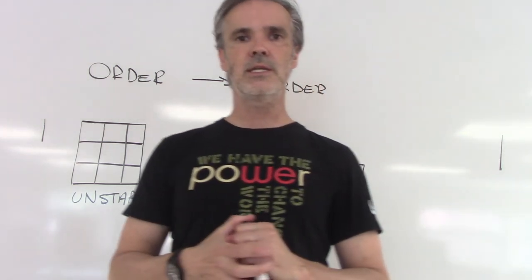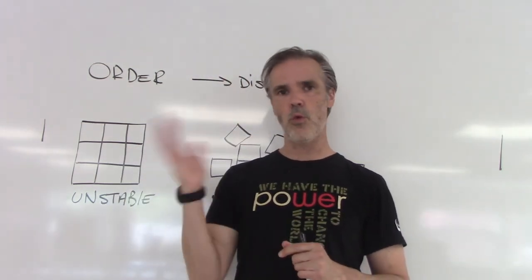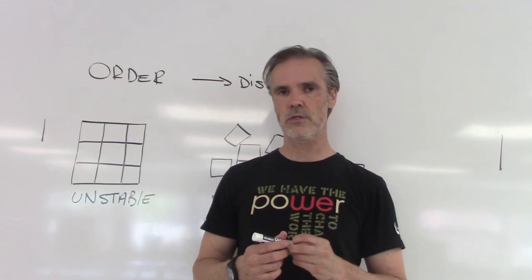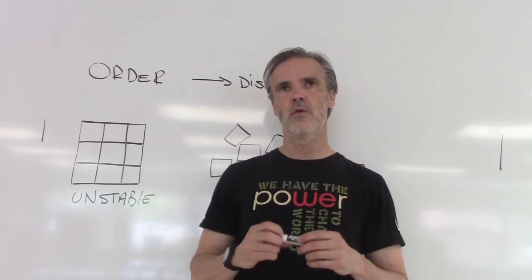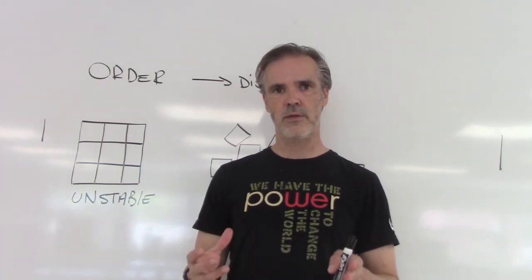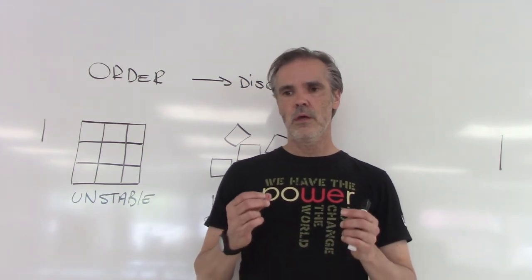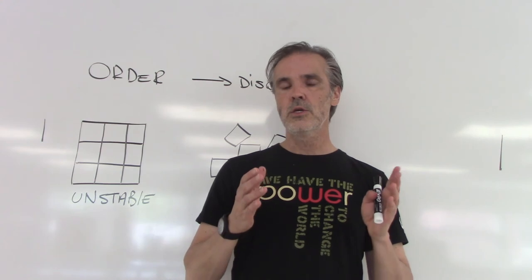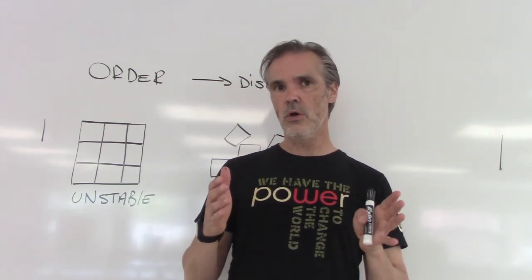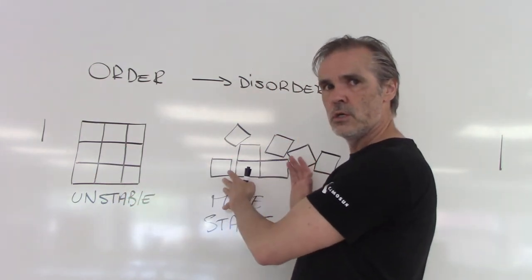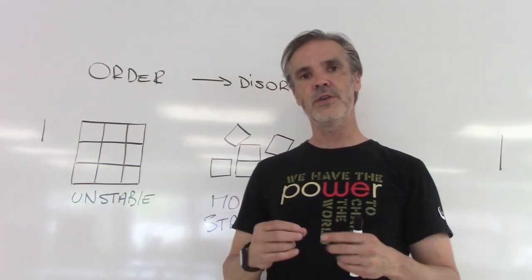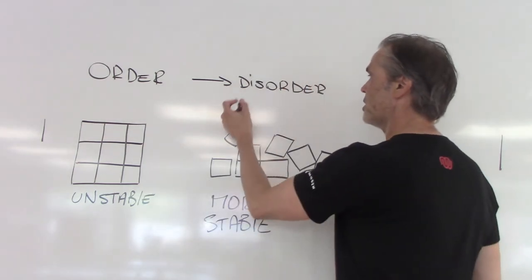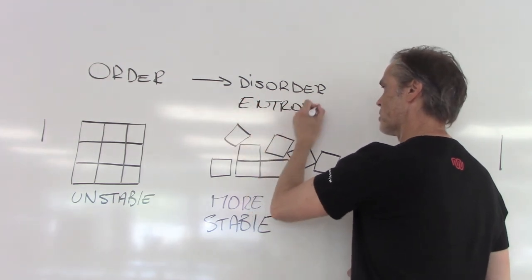Without going too much into the details of thermodynamics, because this is way beyond what we need to know for this course, I need to explain something that is fundamental to energetics. There is a law called the second law of thermodynamics, and it says this: the universe has a tendency to go from ordered to disordered, and the concept of disorder has a name — it's called entropy.